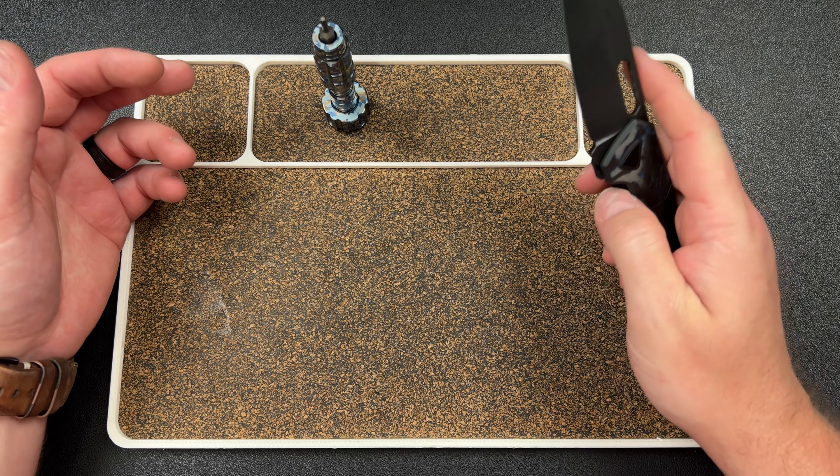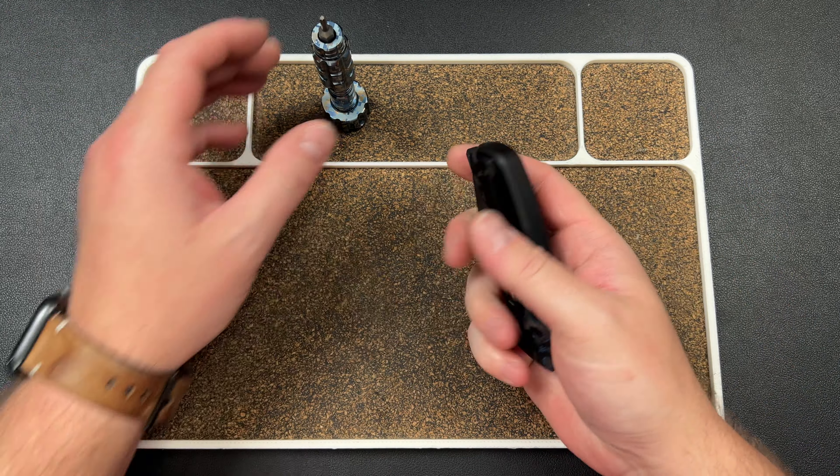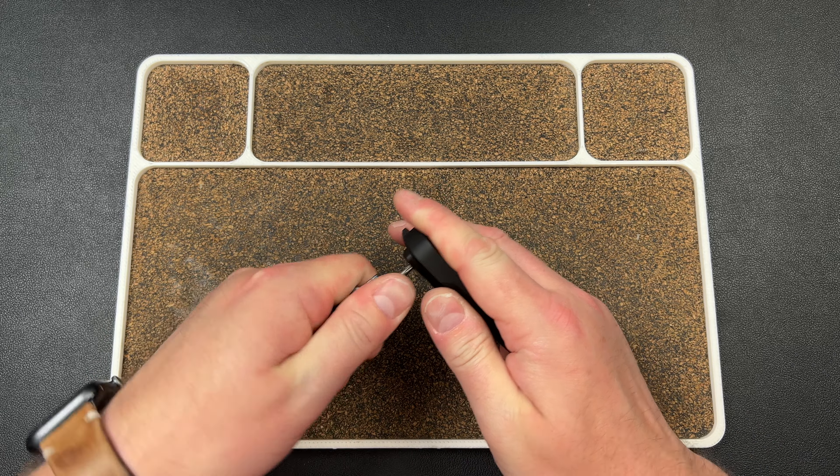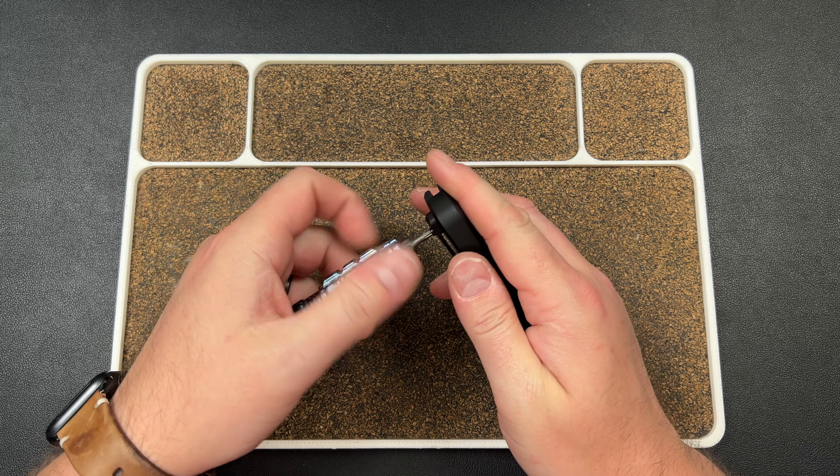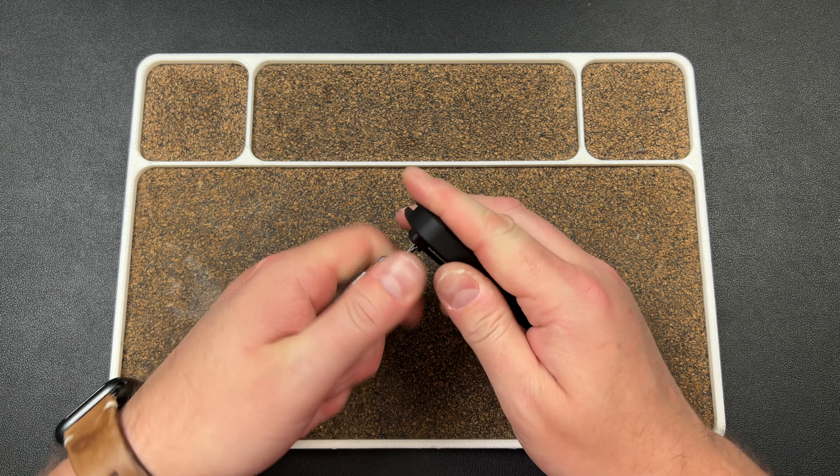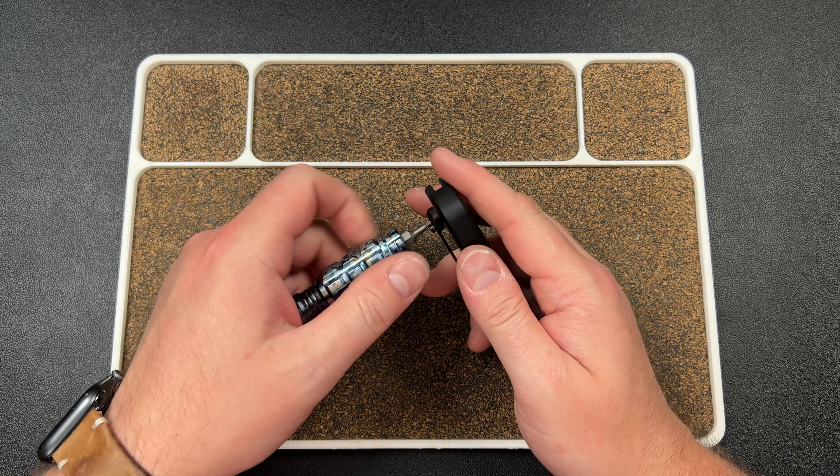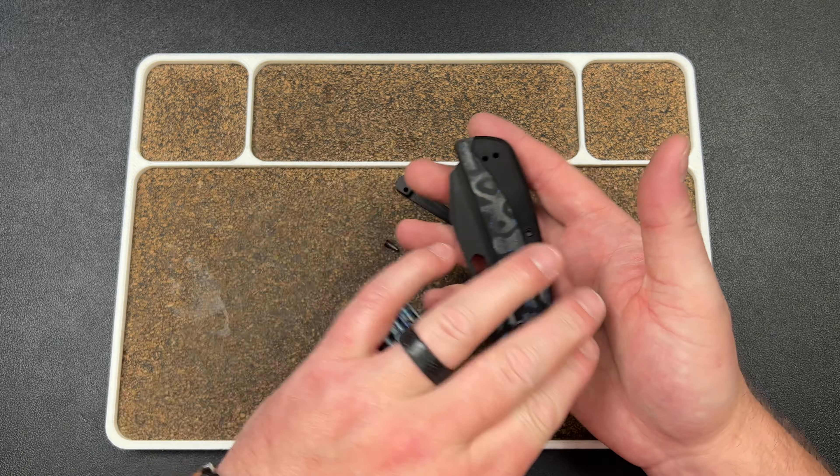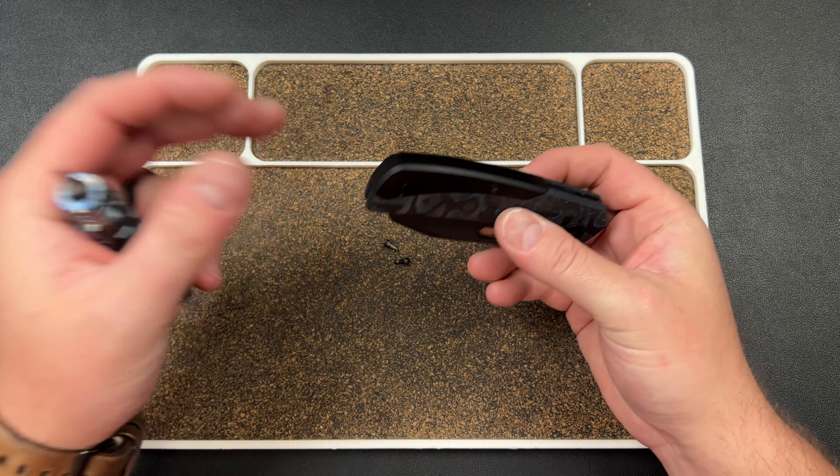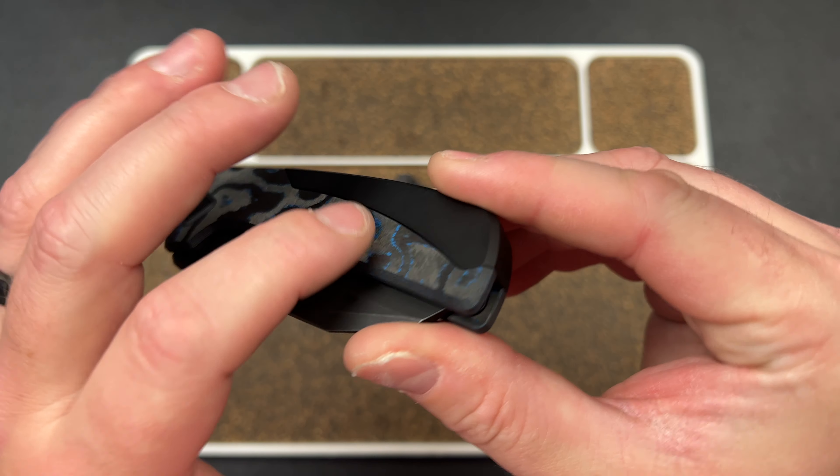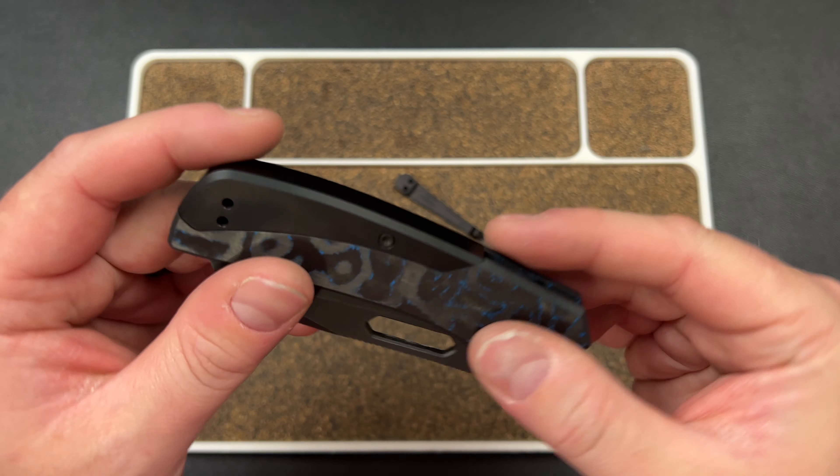The idea here is you take your clip screws, two T8s. There's some stuff we want to change. I think we're going to do a second round of prototypes to get it perfect. We're doing something different with this backspacer, we want it to be perfect and right now it's not perfectly flush.